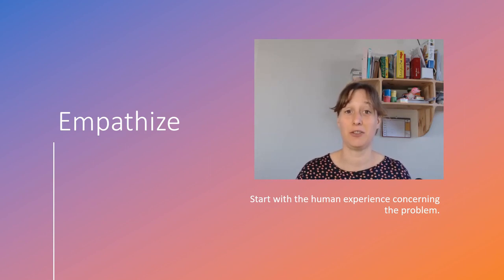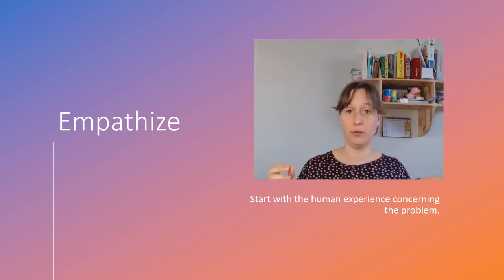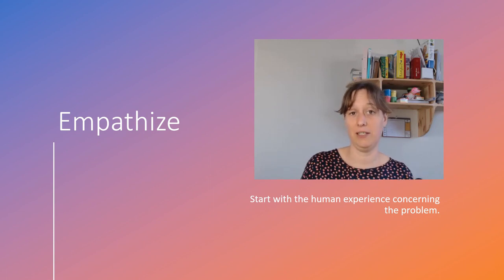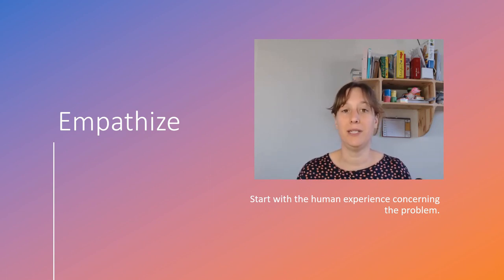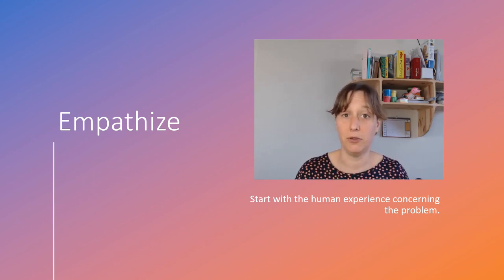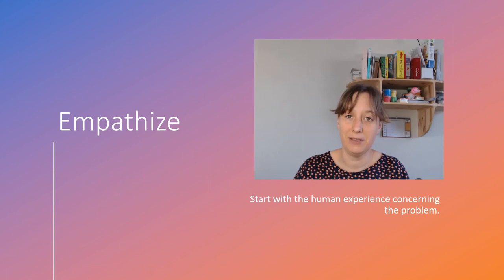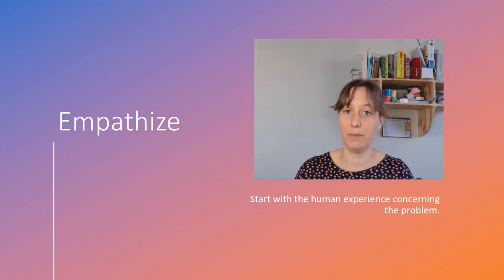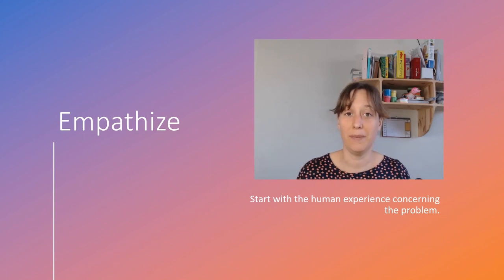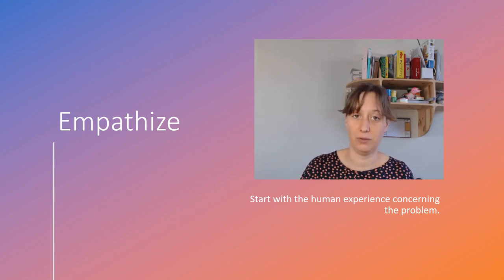Let's go to the fun part of this course, the practice part. We're going to use the Stanford and IDEO model, which has five steps. The first one is empathize. In this phase, you really want to empathize with everybody who's involved in the problem. You want to explore the problem and get subjective opinions about what's happening and why it's complex. Start with the human experience concerning the problem, and that will give you more insights on how to create a solution.